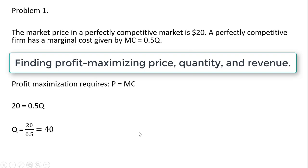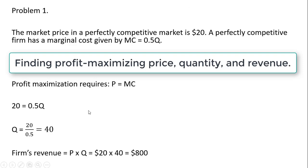In terms of revenue, this firm will earn revenue of price times quantity. The price is $20, and we already solved for the quantity, so this firm will be earning $800 of revenue. I'm not going to calculate the firm's total profit because I do not have the firm's total cost equation.